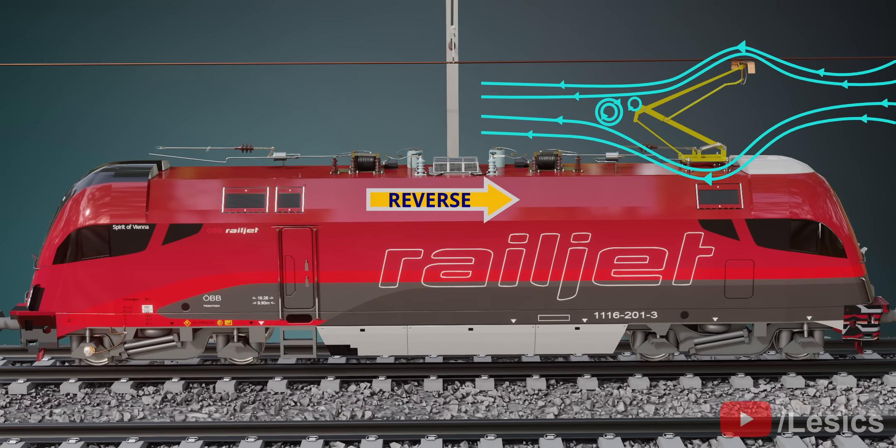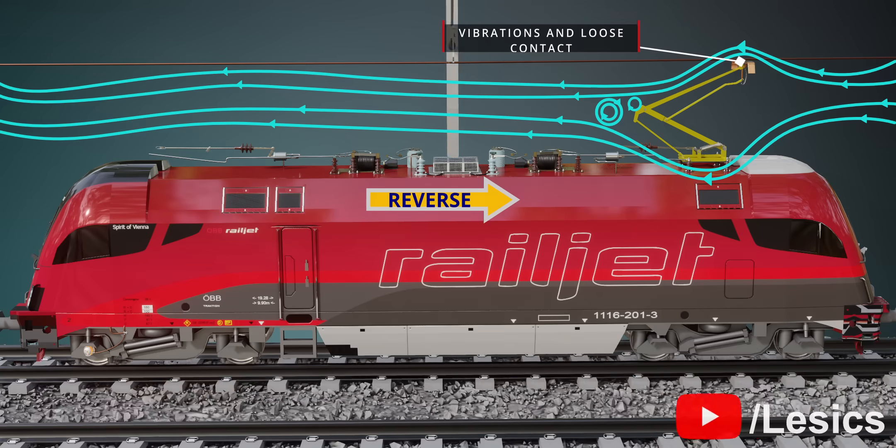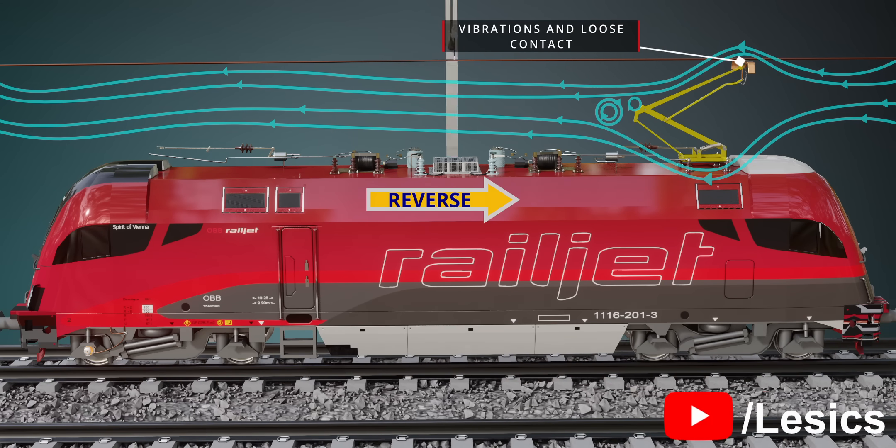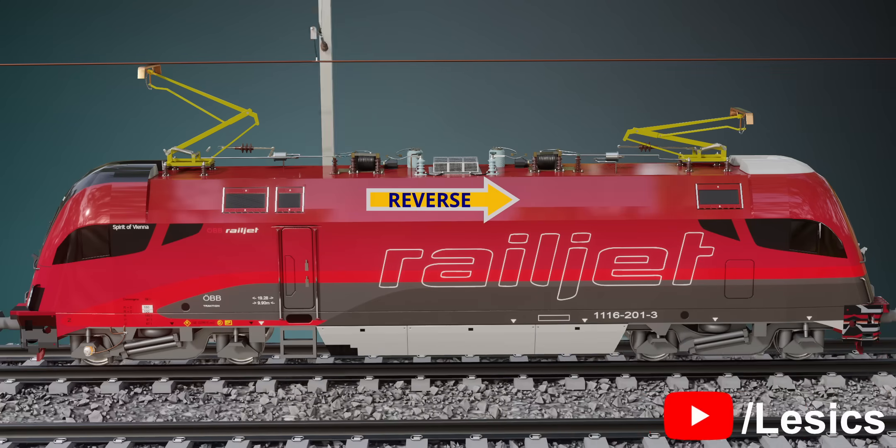Suppose there is only one pantograph installed and the train is traveling in reverse direction at high speed. Here again, aerodynamics is the villain, causing vortices and increasing the drag force on the train. This is why for the train's reverse motion, we need another pantograph with the exact opposite orientation.